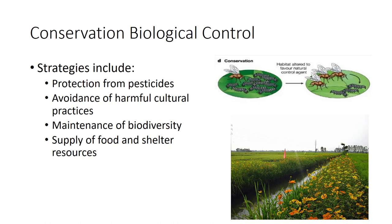Conservation biological control may also include environmental manipulation by altering the habitat to improve conditions for natural enemy growth and reproduction — providing shelter including overwintering sites, and providing alternative food or oviposition sites. For example, flowering plants such as sesame can be planted close to rice crops in Asia to provide a nectar source for parasitoid wasps that attack brown planthoppers.